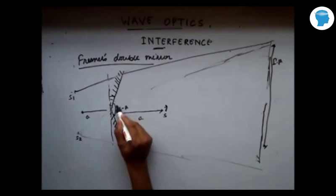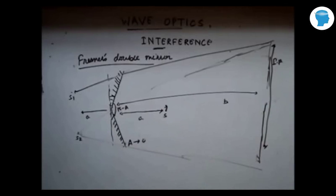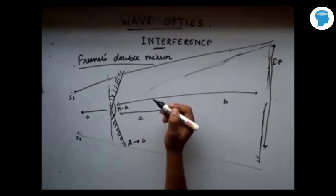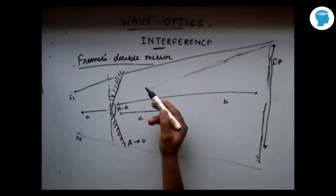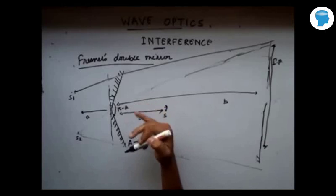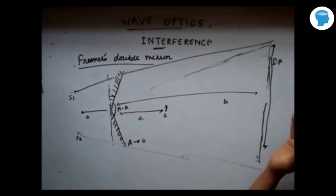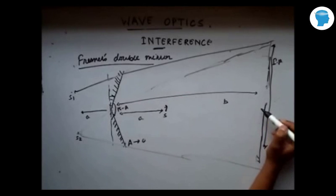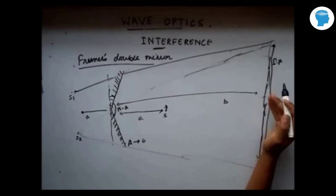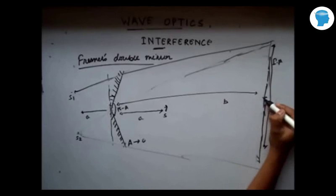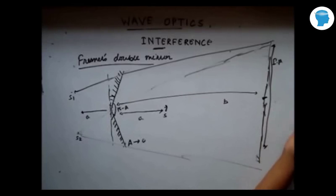Only in this overlap region will we get the interference pattern. Let's assume this distance is B. In the case of Fresnel's double mirror, since both reflections give a phase change of pi, the net phase difference is 0. That means the interference pattern will be exactly similar to what we got in Young's double slit experiment — a central maxima, then a dark band, then a bright band, then a dark band, and similarly on the negative side.